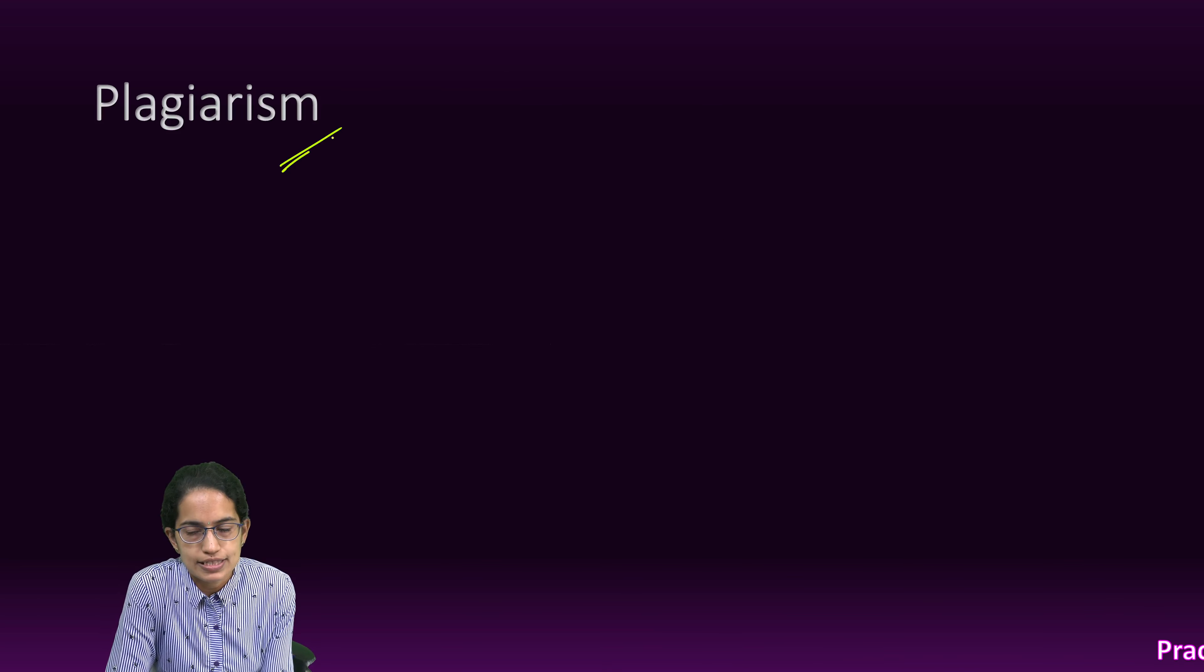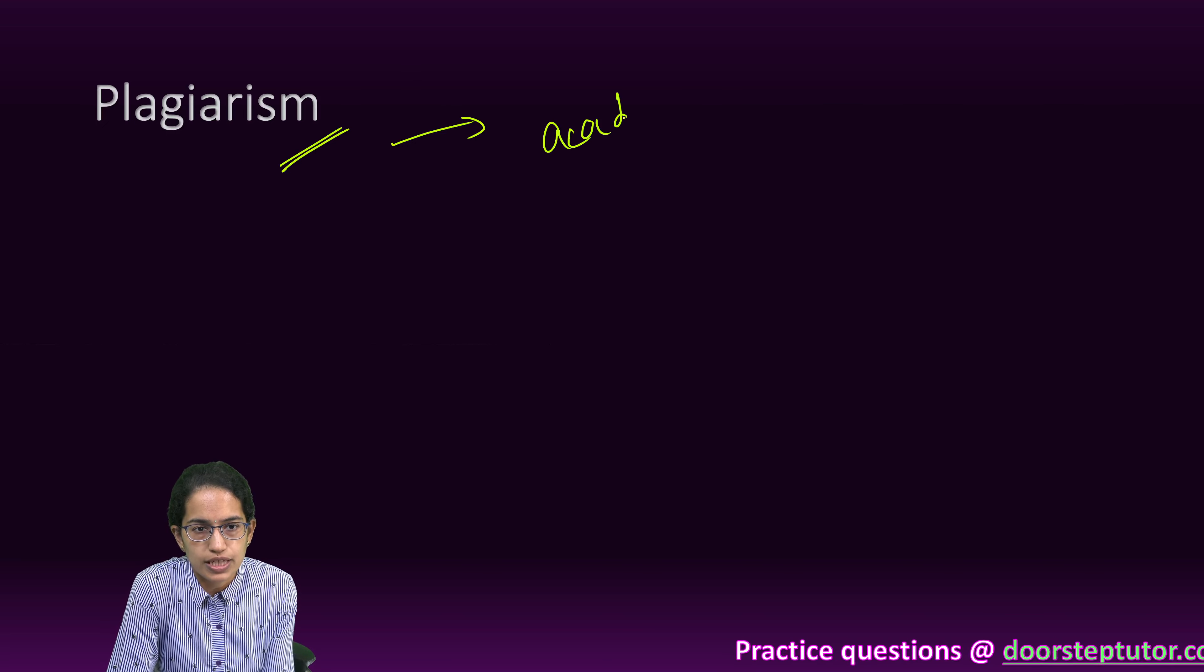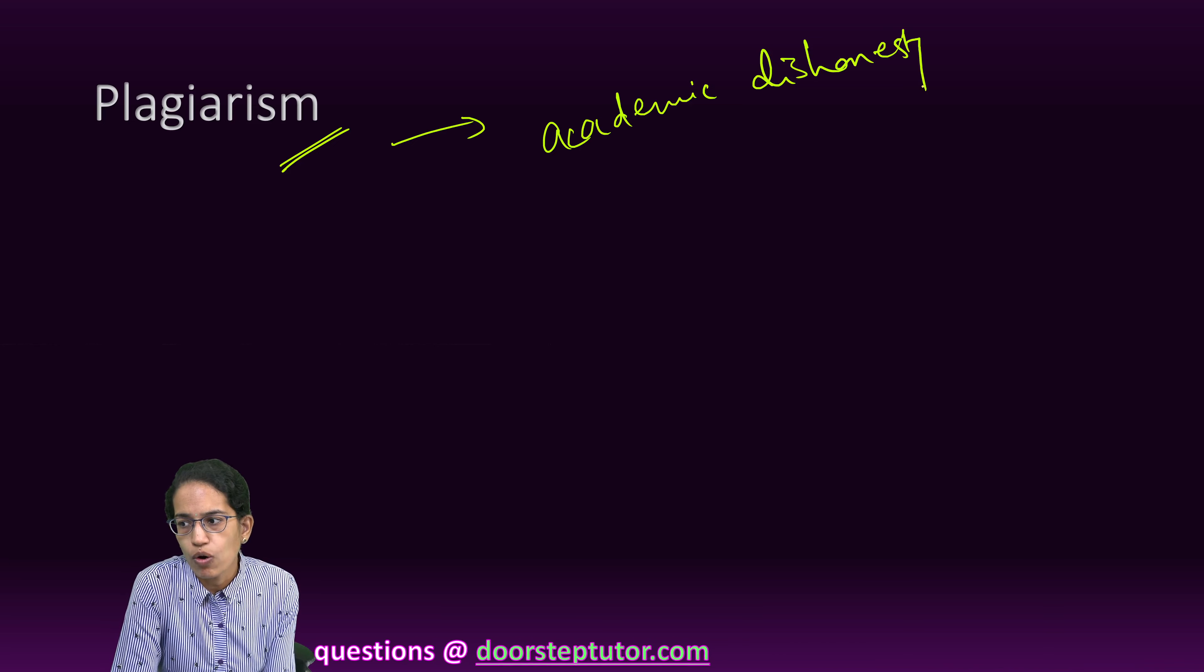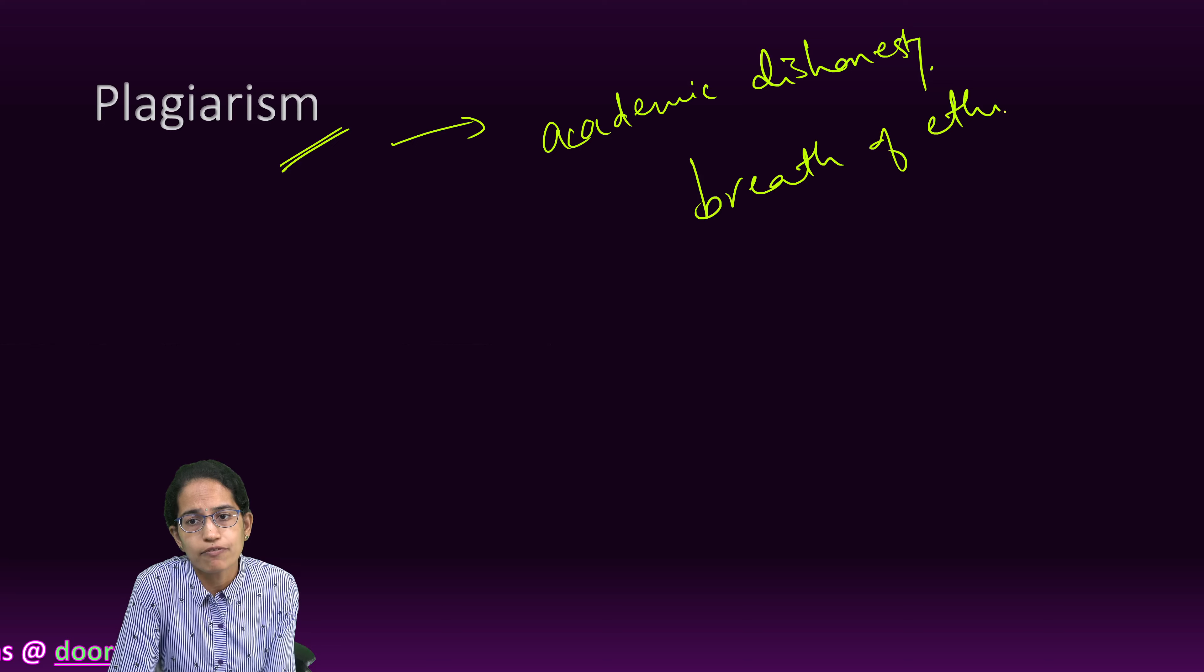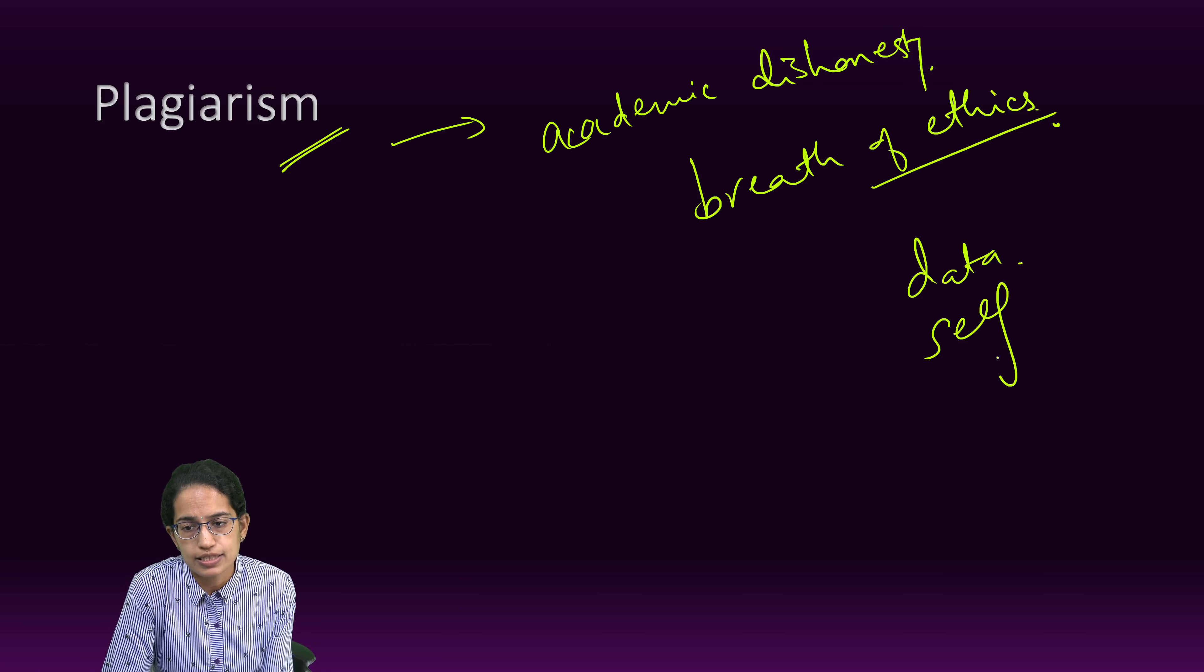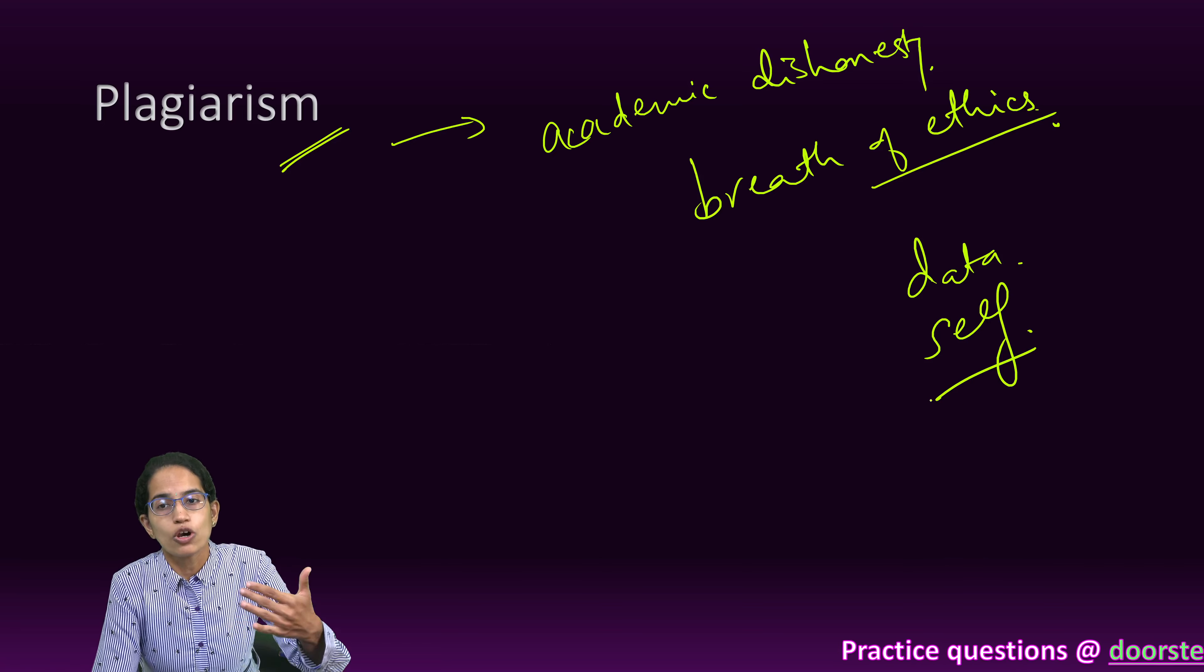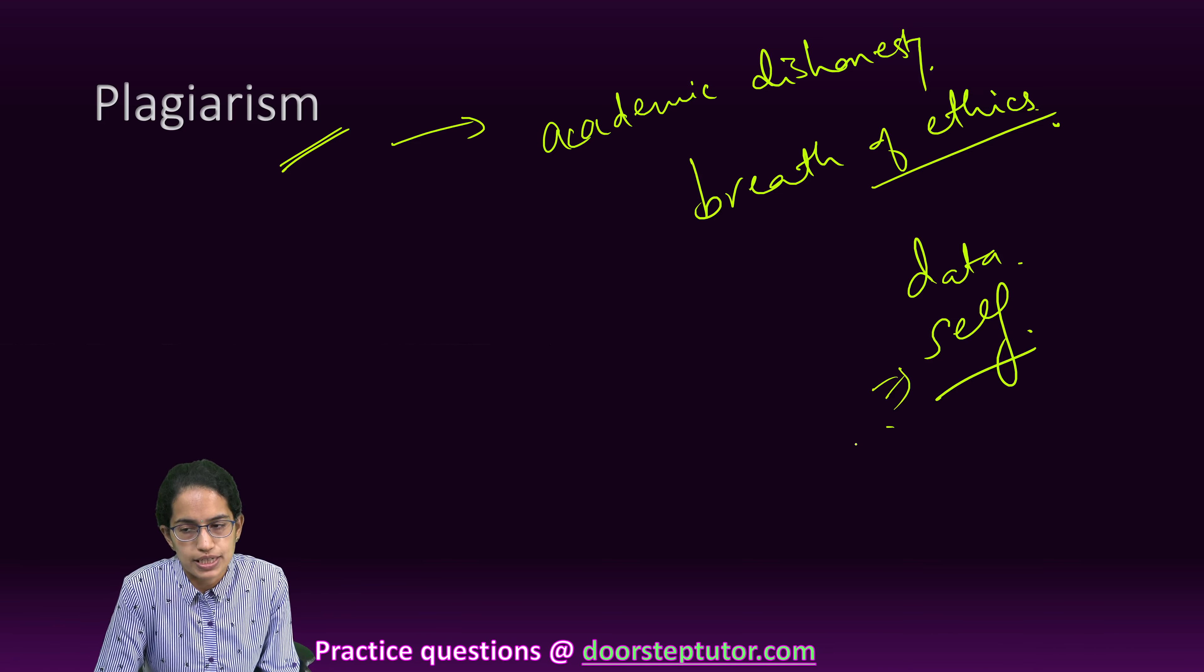The next is plagiarism. Plagiarism is any form of academic dishonesty. It is also a form of breach of ethics and therefore there are various ways to understand plagiarism. Data plagiarism and also self plagiarism are now taken into account when we talk about plagiarism. That means your own work, a part of that, is being reproduced somewhere else. So, we call that as self plagiarism.